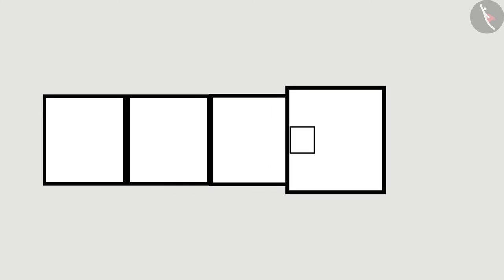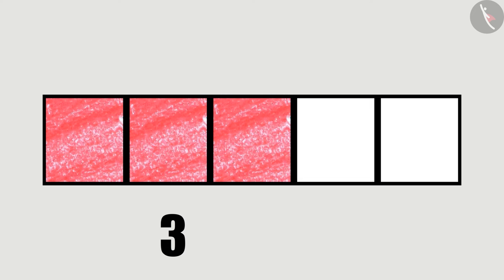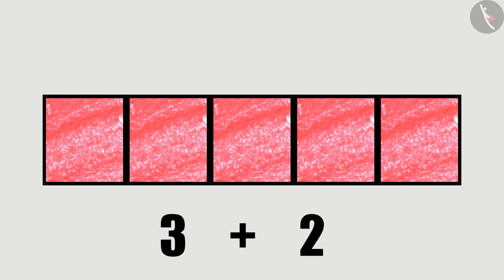Let's think that we have five frames and the number three written against it. Can you count three frames, five frames, and color them? Awesome! Now color two more frames. Now can you count how many frames you have colored in total? Five!